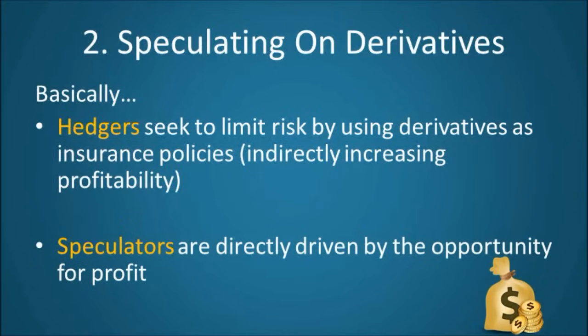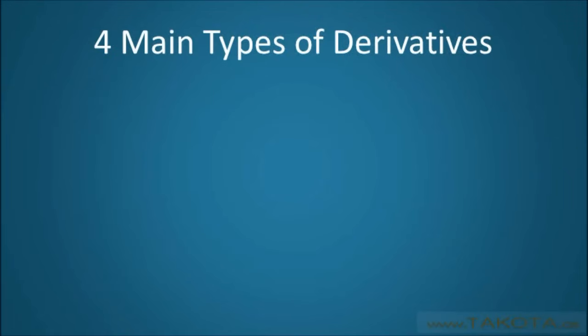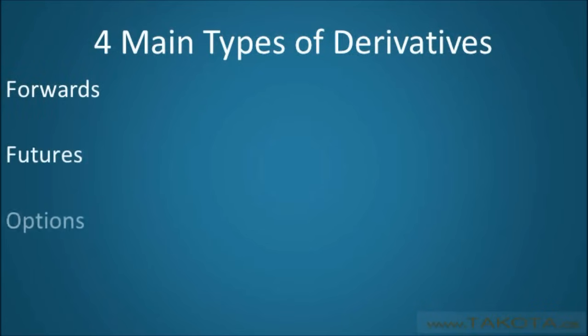Now that we have a basic understanding of how derivatives are used, let's take a look at the different types. There are four main types of derivatives: forwards, futures, options, and swaps. Each of these concepts will be addressed in greater depth in future videos. Here, our aim is only to provide a basic overview.